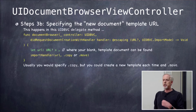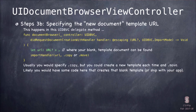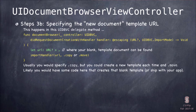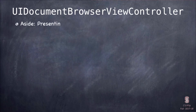You must provide a template URL. There's a delegate method called documentBrowser(_:didRequestDocumentCreationWithHandler:) that fires when someone wants to create a document. It hands you an import handler—a little function that takes the URL of a blank document and an import mode: copy if you create the blank once and hand it out every time, or move if you create it fresh each call. Just call that handler and you're done.